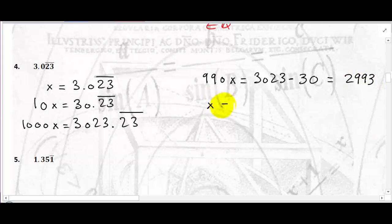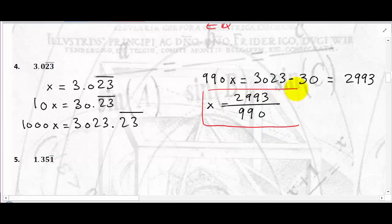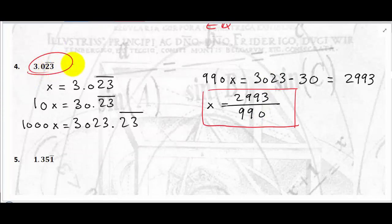So x equals 2,993 divided by 990. This is irreducible — you cannot simplify it. We have our two integers whose ratio equals the given number. A decimal number with an infinite number of digits but with a repeating pattern is a rational number.